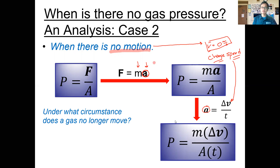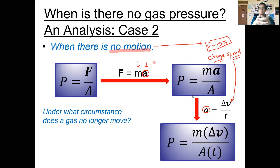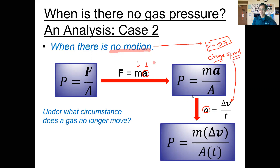We have now mathematically shown that if an object is not moving, the whole numerator is zero and pressure is zero as well. Make sure you can follow through this mathematical explanation for why pressure is related to motion. So the question then is: in the first case, when there is a vacuum there is no mass. But when does a gas particle no longer move? Is there a condition we can observe where the gas particles stop moving?